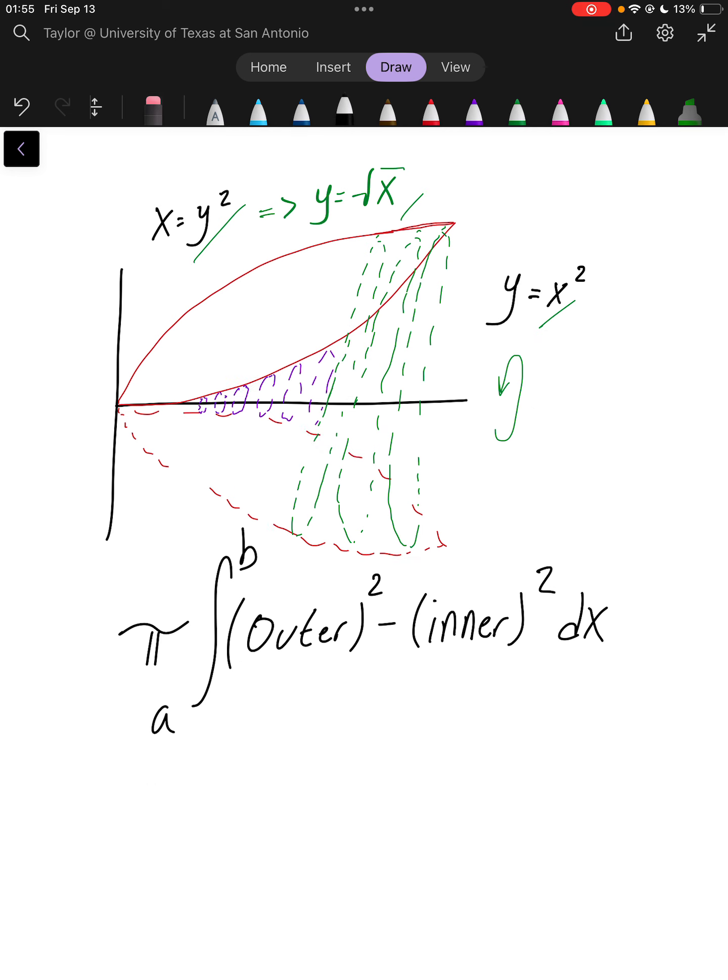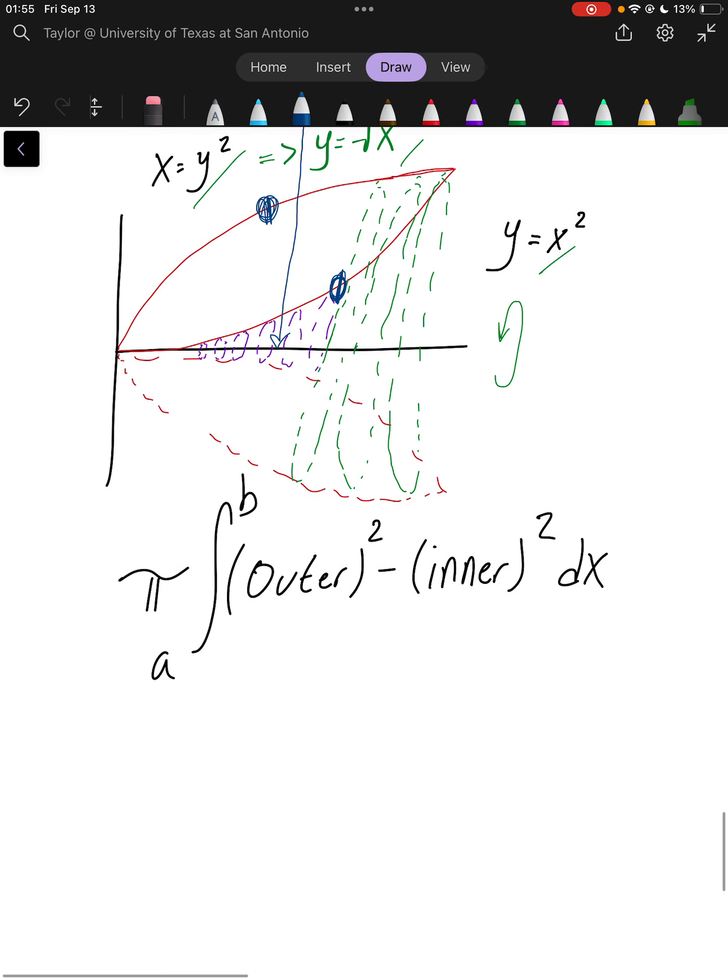So if again, if you remember from area between curves, when we integrate areas with respect to x, we can use top minus bottom, which is the same thing as drawing a vertical line. And so we see we hit this function here first, and then we hit this function second. So that means this is our outer function, and this is our inner function. So I'm going to go ahead and substitute those in here.